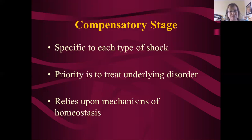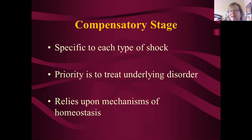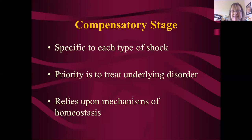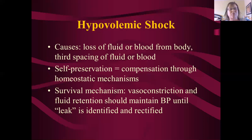In the compensatory stage, different mechanisms work for each type of shock. They are specific to cardiogenic, hypovolemic, and distributive shock. The priority is to understand the underlying disorder and treat it — a patient may look the same in two different kinds of shock, but the underlying mechanism is entirely different. All of these compensatory mechanisms rely on homeostasis — the body's desire to maintain itself and balance how it's functioning against the symptoms being presented.